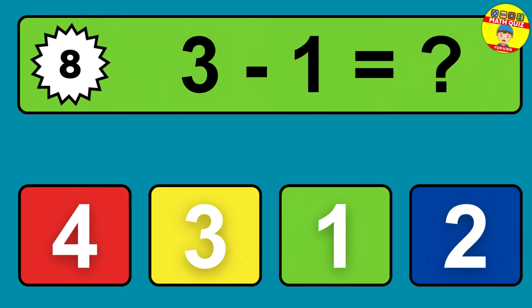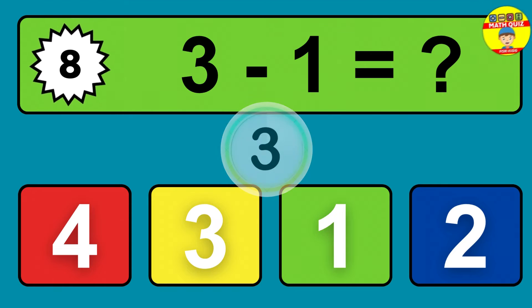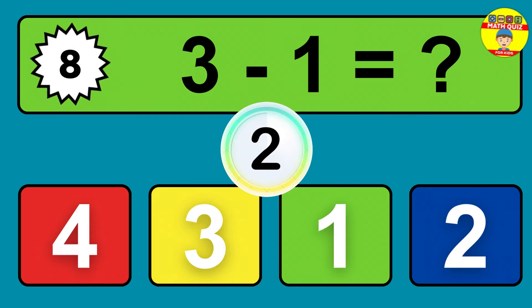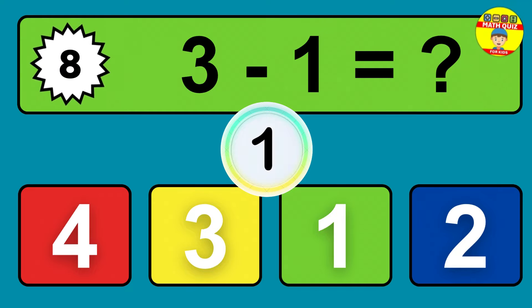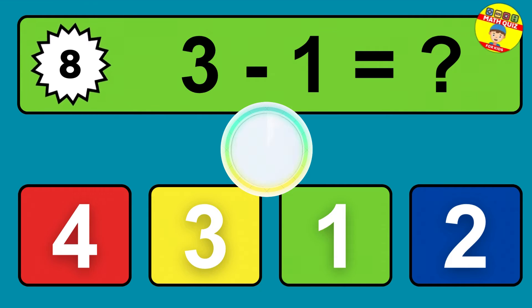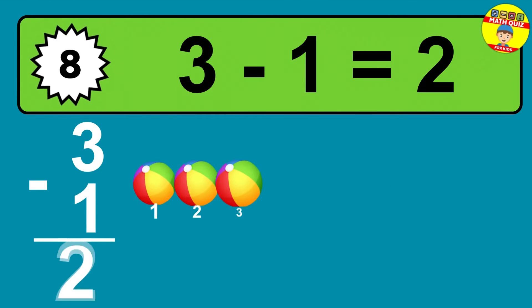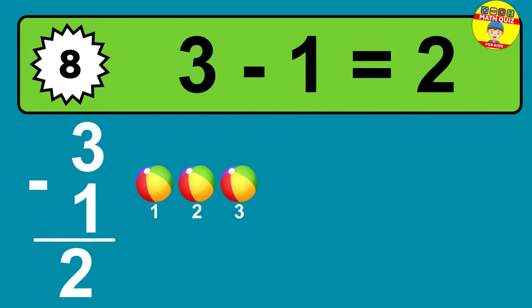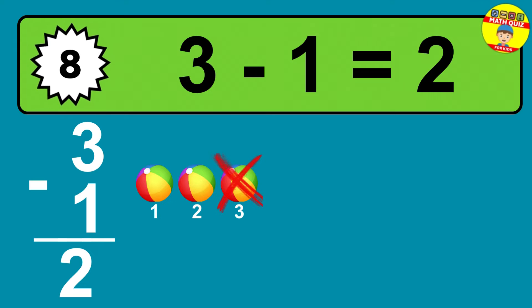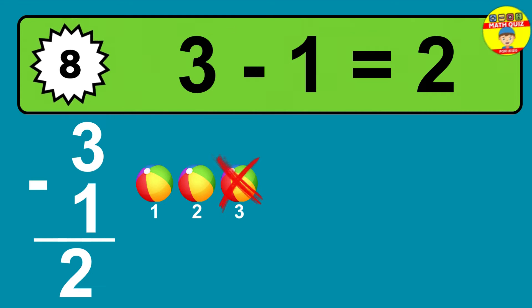Question eight: three minus one equals what? The answer is three minus one is two. Let's count it: one, two.